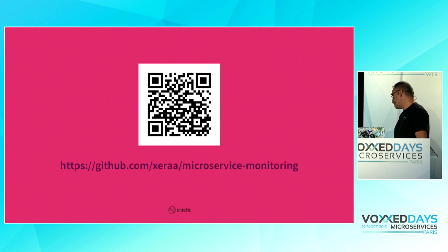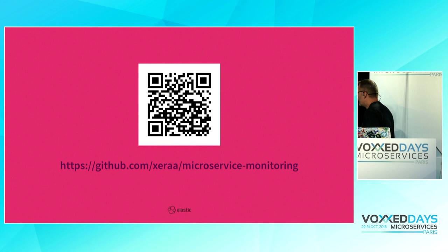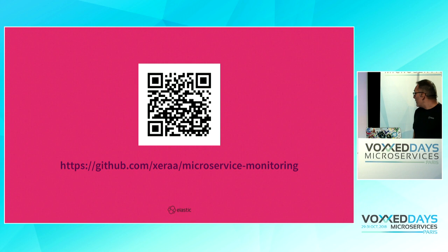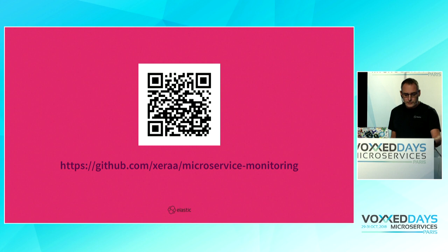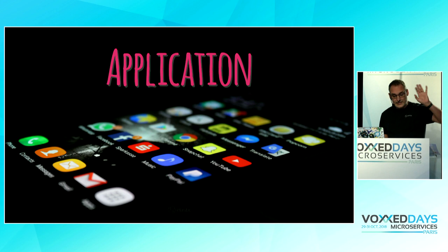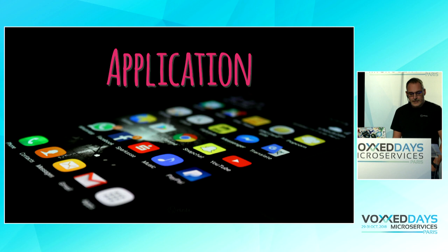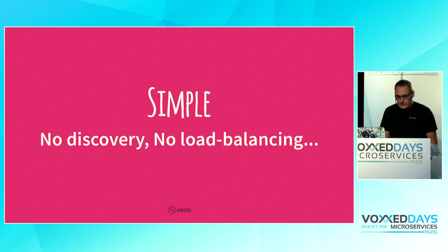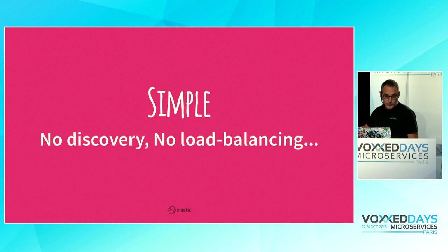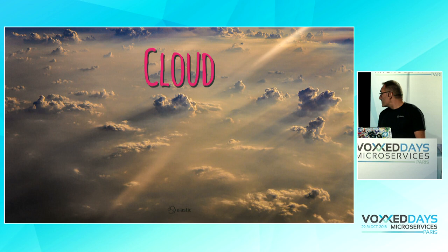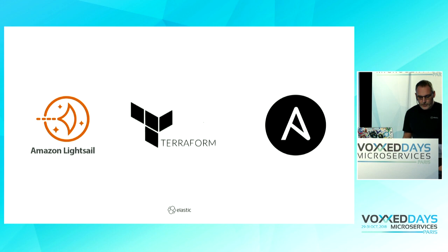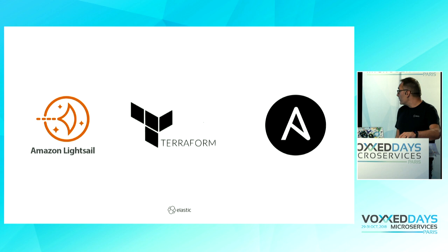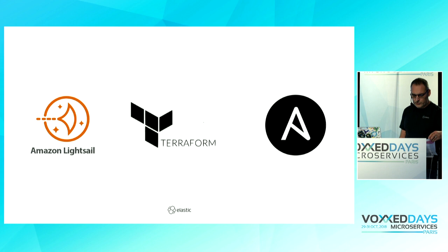I'm going to use this repository for the demo — everything has been deployed. I'll show you the architecture later. We are using Spring Boot as the base of the application, and we have different services running. The application is super simple: there is a database somewhere involved. It's deployed on AWS using the cheapest option, AWS Lightsail. We're using Terraform to automate creation of instances and Ansible to deploy our services, running under Ubuntu 16.